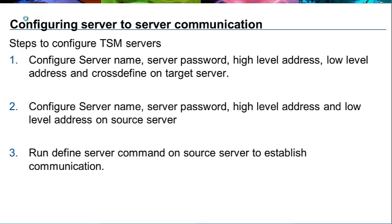The first step is to configure the server name, server password, high-level address, low-level address, and turn cross-define on on the target server. The server name can be found by querying the system. The server password is unique and only used for server-to-server communication, and will not affect admin or client passwords. The high-level address is the IP address of your target server, the low-level address is the TCP port, and cross-define on allows the target server to define itself to the source server so communication is configured on both servers in one step.